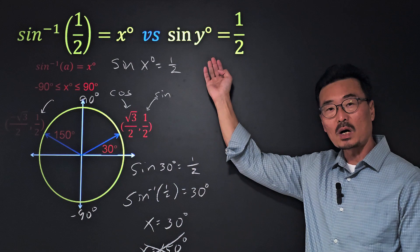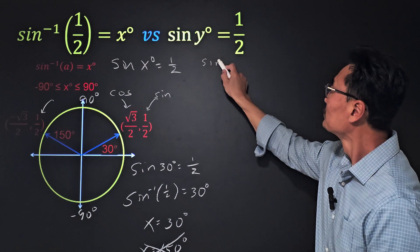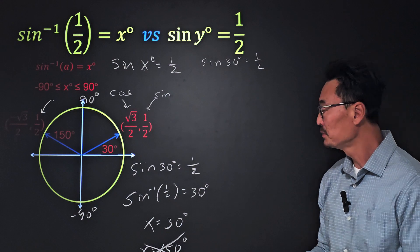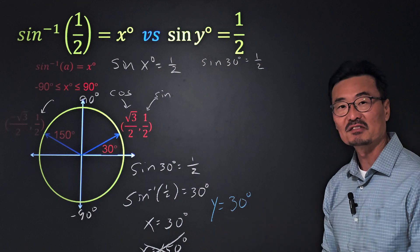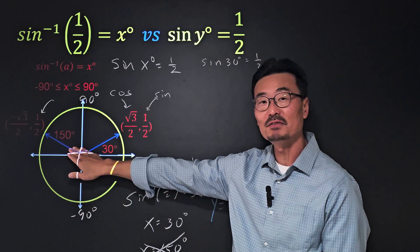What about sine of y degrees equals one-half? Just as we did down here, sine of 30 degrees equals one-half, meaning we know that y equals 30 degrees.